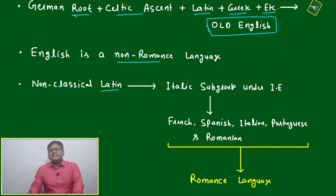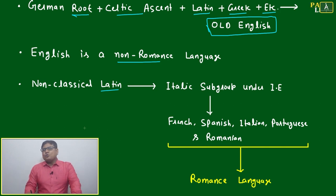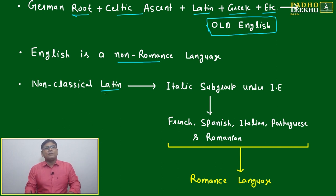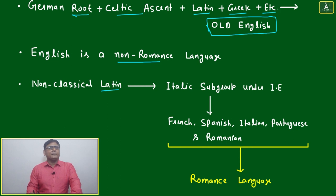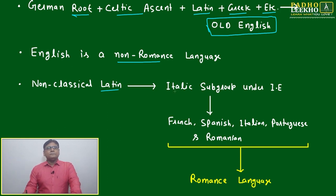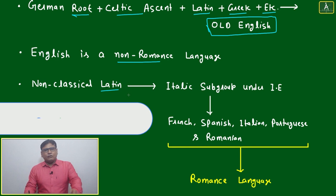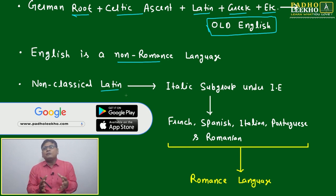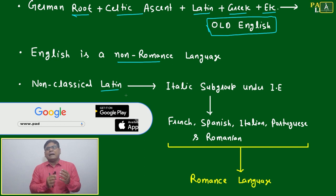In ancient times, most linguistic development and other developments happened around the Latin area, which we can also call the Rome area or the Italy area. Non-classical Latin was confined to a very structured way of using the Latin language.